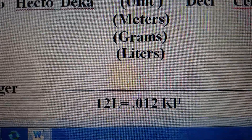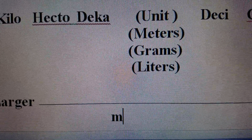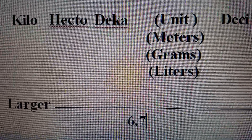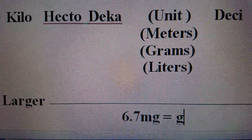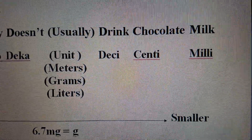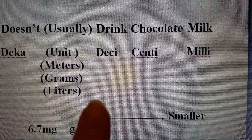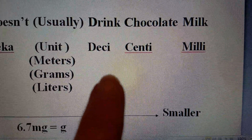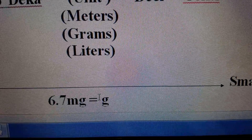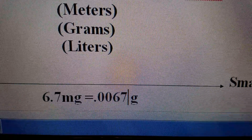Let's try one more example. Let's convert 6.7 milligrams to grams. Milligrams uses the prefix milli, so I would start all the way to the right of my acronym, and I need to find grams, which is under the units. So I would move from milli — one, two, three spaces to the left. I would move the current decimal three spaces over to the left, and my answer would be 0.0067 grams.